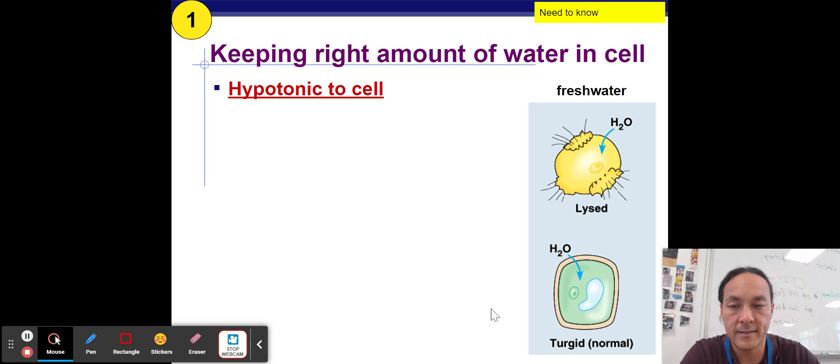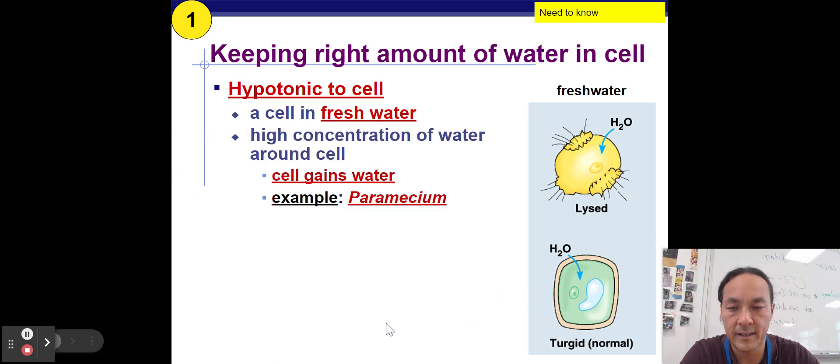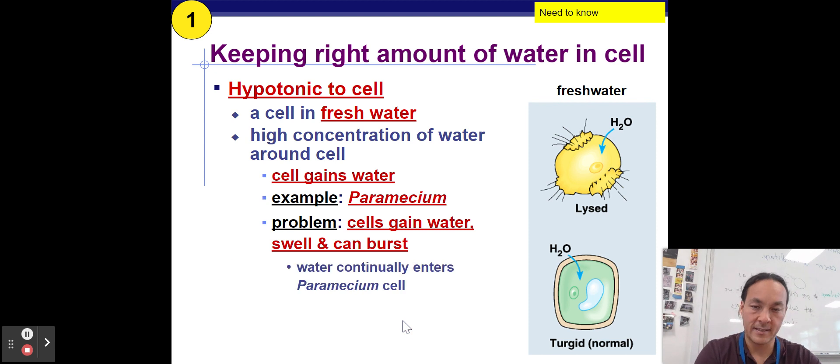So here are some slides on it. If it's hypotonic relative to the cell, there's going to be a higher concentration of water outside of it. It's going to cause the cell to swell and gain water. There is a problem about a paramecium in your study guide that I would like for you to try and do and that we'll do in class on our review day. And the paramecium is in a hypotonic environment. So water is continually rushing into the paramecium.